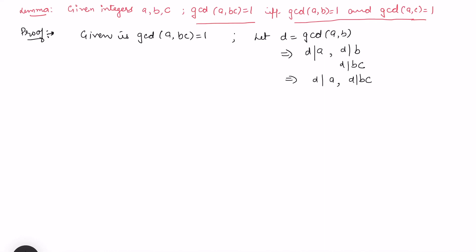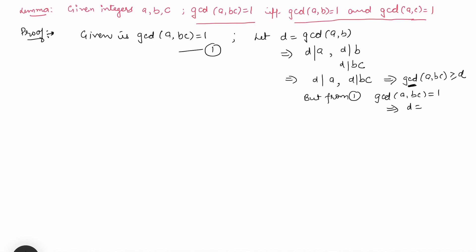This implies d divides a and d divides bc. So when d divides both a and bc, this means gcd(a, bc) must be greater than or equal to d. But from our given condition, gcd(a, bc) = 1, so that implies d has to be 1. Thus gcd(a, b) = 1.